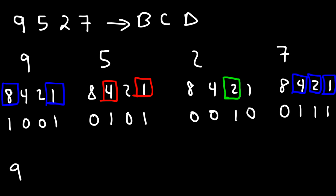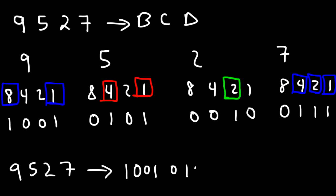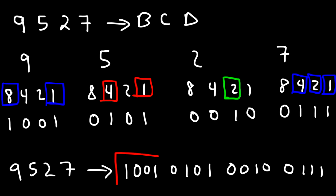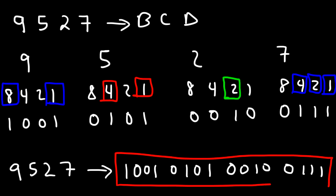And so 9,527 can be represented by the binary coded decimal 1001 0101 0010 0111. And so this is the answer for the problem. That's it for this video — now you know how to convert a decimal number into a binary coded decimal.